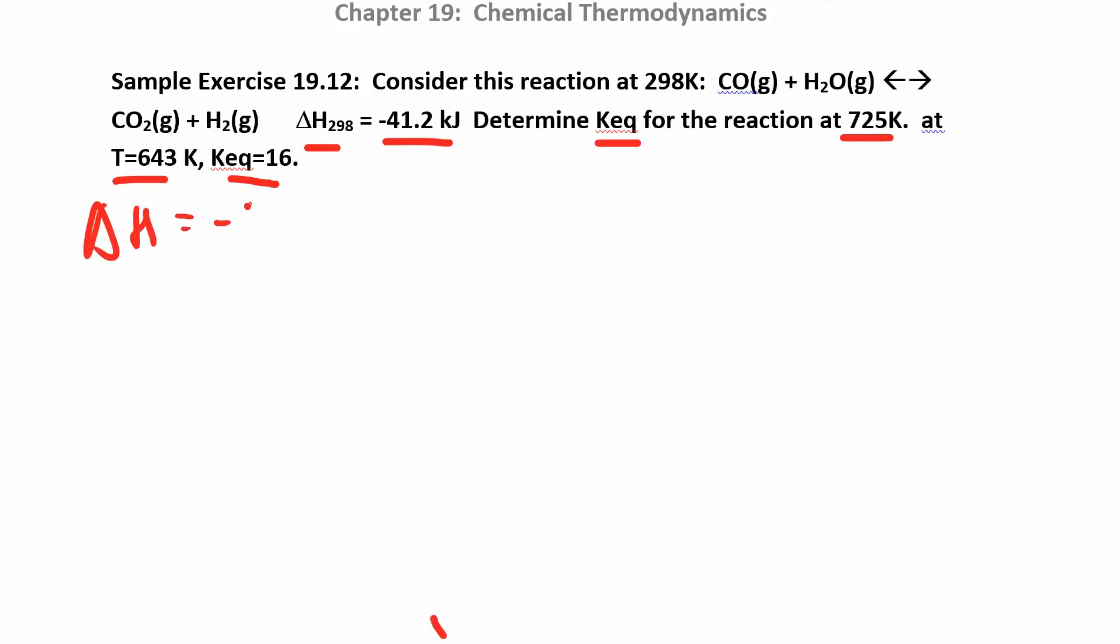Delta H is negative 41.2 in kilojoules. They say at one temperature, T1, we'll say this is 643. Then the K that goes with that one is 16. And then T2 is 725. And we're trying to find K2.